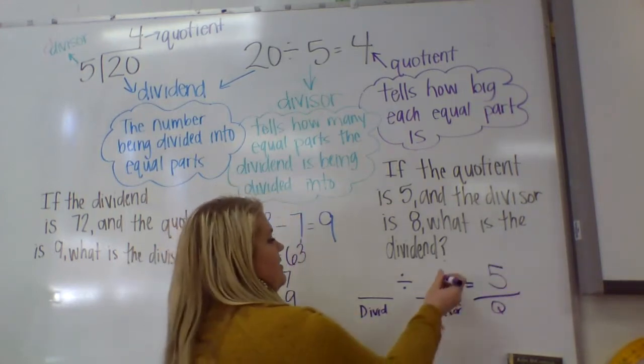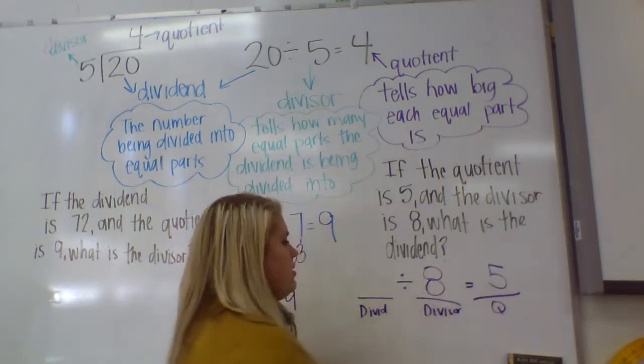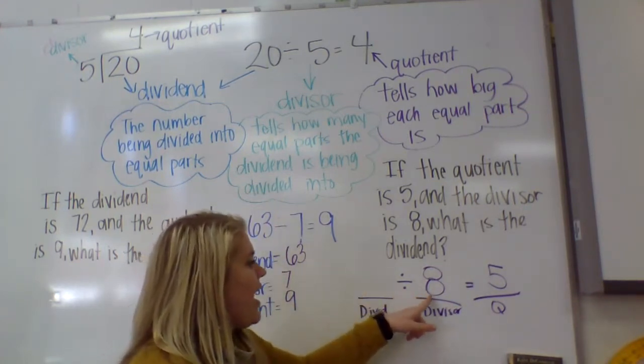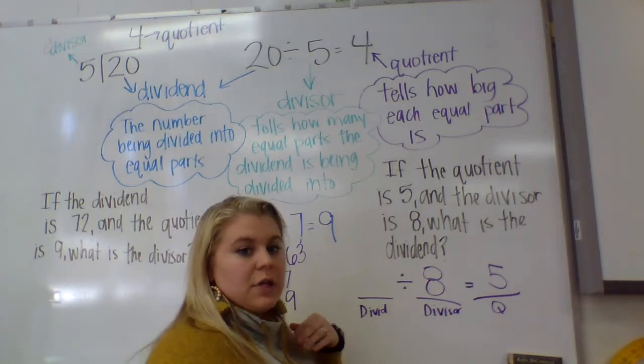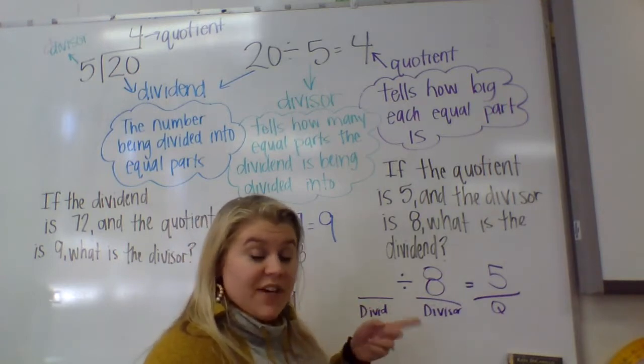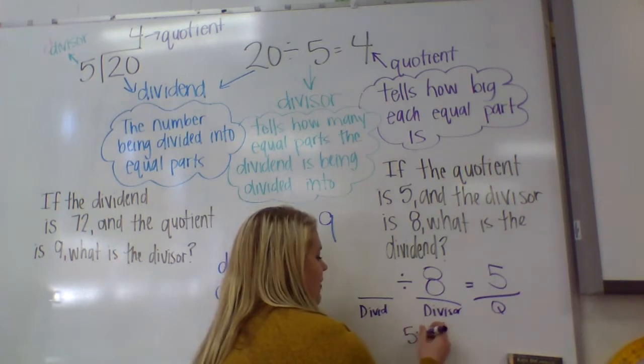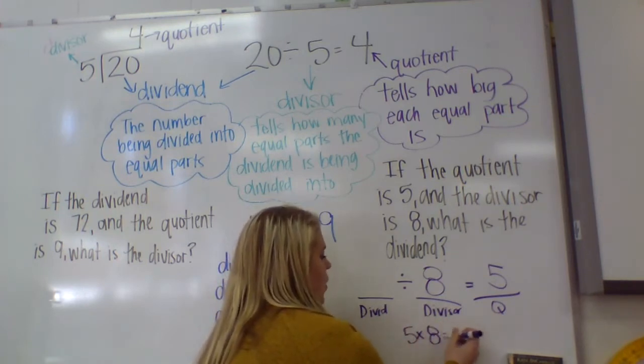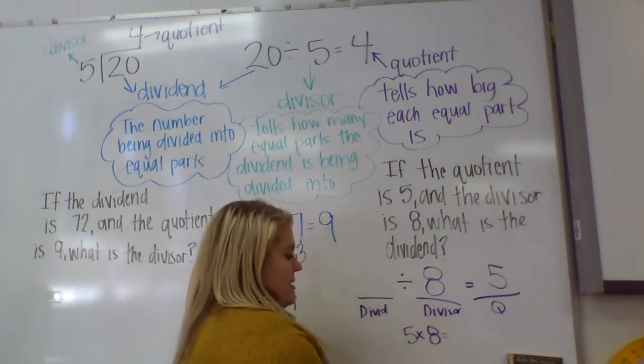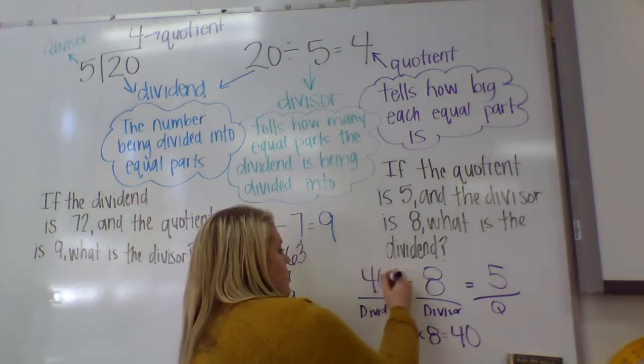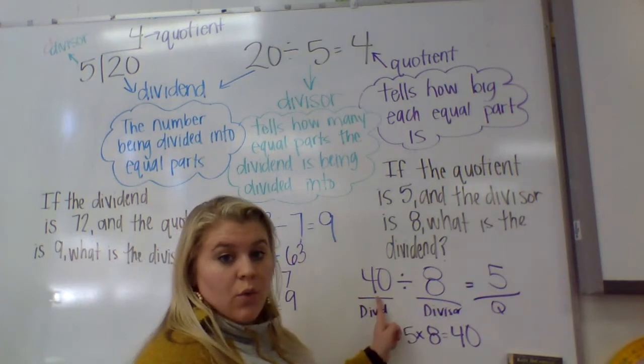If the quotient is 5, and the divisor is 8, what's the dividend? What divided by 8 equals 5? Remember, we know that division is the inverse of multiplication. So I could do 5 times 8 equals what? Because our dividend is the biggest number. We know 5 times 8 is 40. So the dividend would be 40.